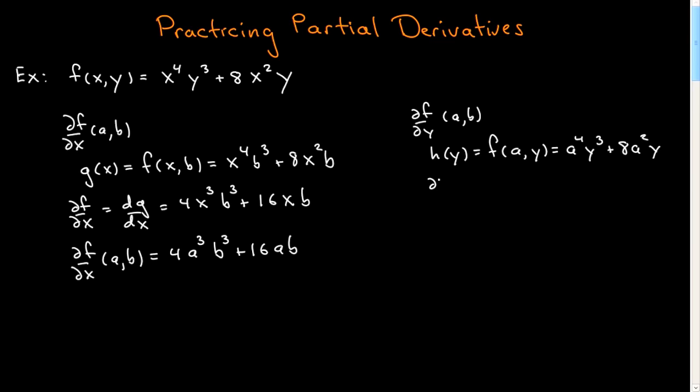We can now take the partial derivative with respect to y. It's just the derivative of h with respect to y. And a being a constant, that's 3a⁴y² plus 8 and a are a constant, so it's just 8a². So if we want ∂f/∂y at (a,b) is 3a⁴b² + 8a².